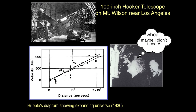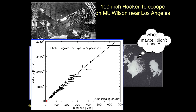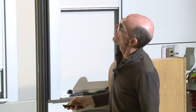A more complete plot, using distant galaxies and supernova brightness, shows this linear trend continues much much farther — and then it slightly starts to bend. The universe is expanding: the farther away a galaxy is, the faster it's moving away from us, and it's a very tight relationship.